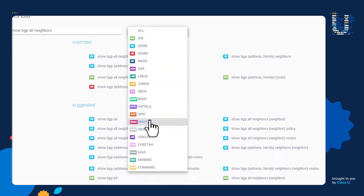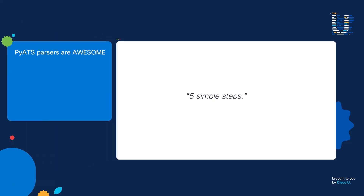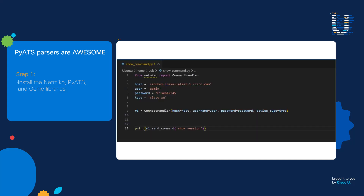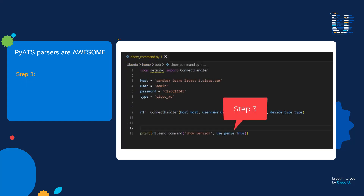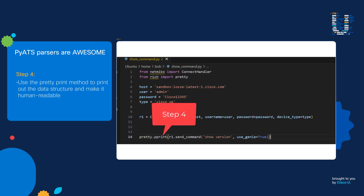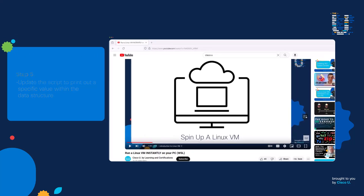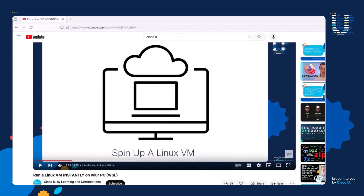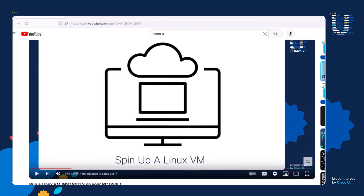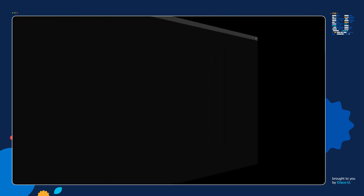I'm going to show you how to use these parsers in five simple steps. Step one: install the NetMiko, PyATS, and Genie libraries. Step two: write a NetMiko script to run a show command on a router. Step three: use the Genie parser to convert show command output to a Python data structure. Step four: use the pretty print method to print out the data structure in a human-readable way. Step five: update the script to print out a specific value within the data structure. Note that PyATS requires Linux — if you have a Windows machine, you can easily spin up a Linux VM using WSL2. I cover exactly how to do this in a linked video in the show notes.